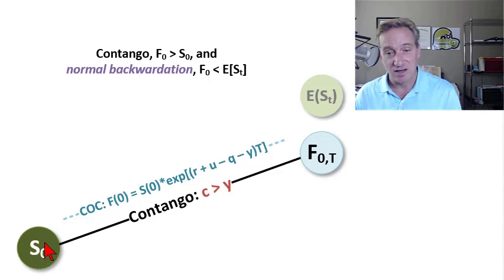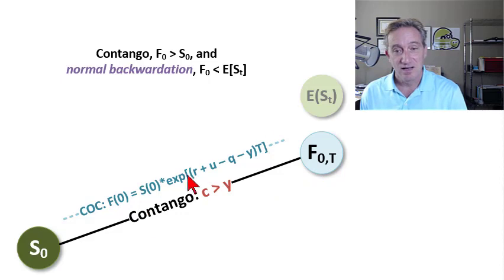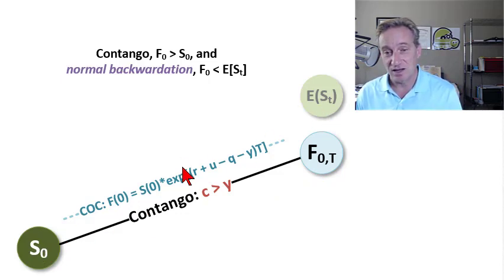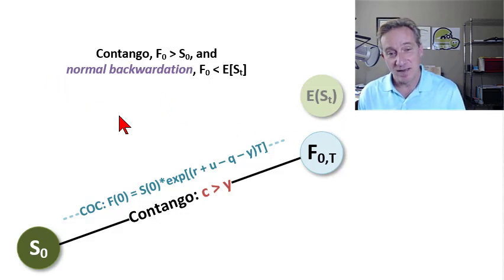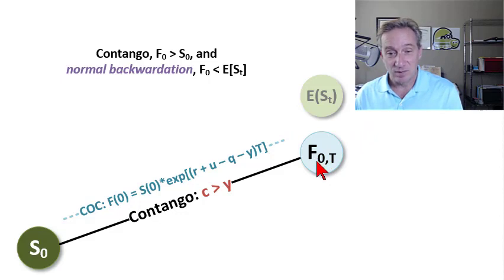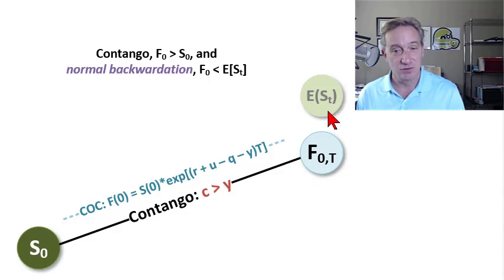If we're here today in July, the futures price is a promise to buy or sell this commodity at a predetermined delivery window in the future at a predetermined price. The expected future spot, if we're here in July, is something we can predict or anticipate or make a wager on, but nobody can know what it is. Normal backwardation is the theory that tells us this traded futures price that we observe today should be less than the expected future spot price.